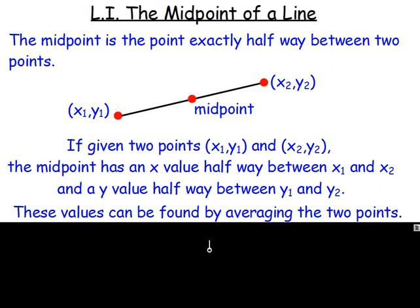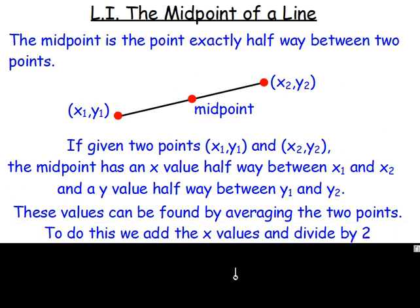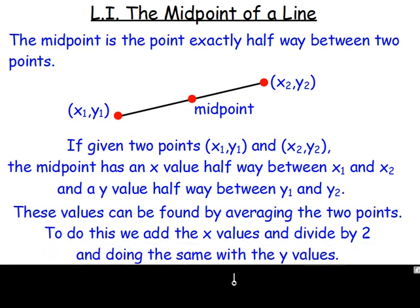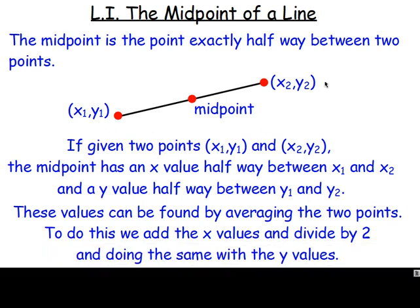A lot of the time when people talk about averages, they're talking about the mean. The way you get the mean is you add them all up and divide by how many you have. So you add the x coordinates together and, since you've got two points, divide by two. To do this, we add the x values and divide by two. And with the y's — you guessed it — you do the exact same thing: add the y values and divide by two.